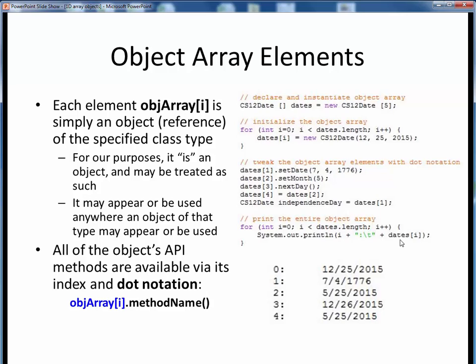Again, this general term for the ith array element is simply one CS12 date object. When this code is executed, here are the resulting CS12 date array elements we print back out.